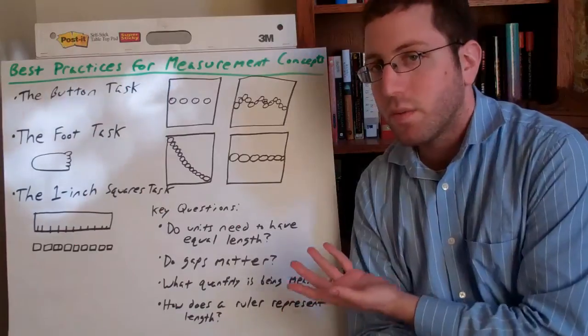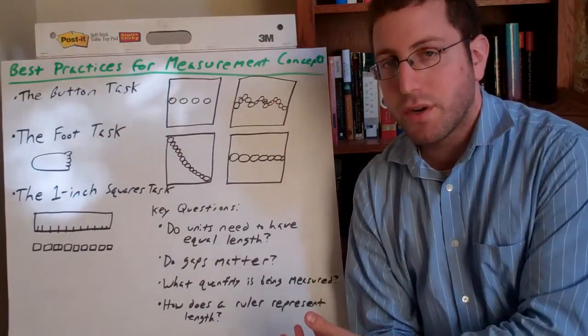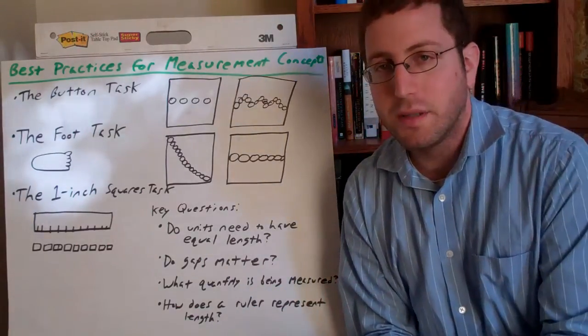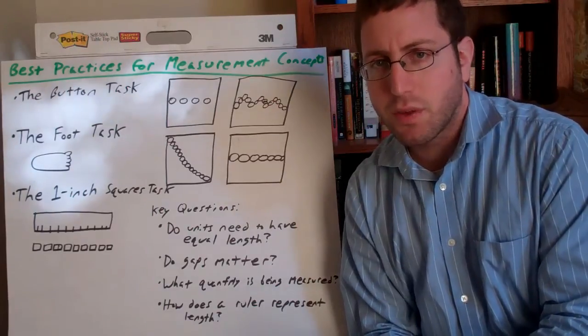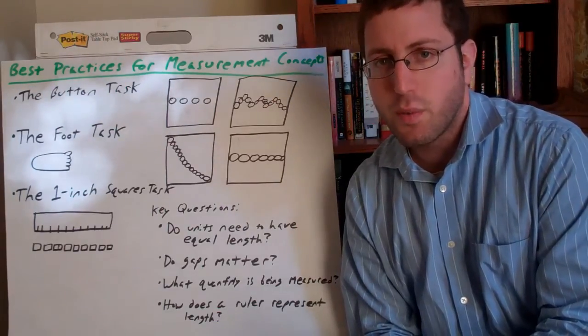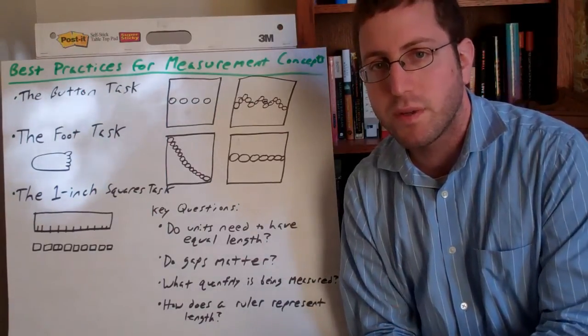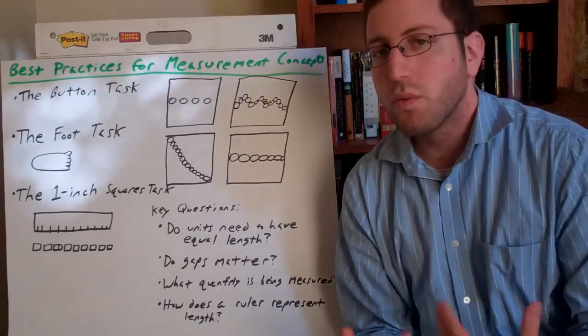Do units need to have equal length? Do the gaps between units when you're measuring matter or not? What quantity is being measured? Are you measuring the length? And when you say you're measuring the length, which length? Are you measuring the width, like which width, because those words can sometimes have confusing double meanings.